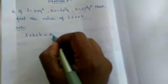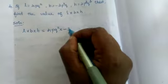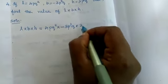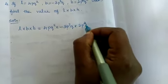What is the value of L? 4PQ square into, what is the value of B? Minus 3P square Q. What is the value of height? 2P cubed Q cubed.